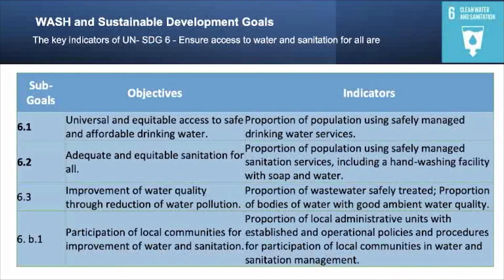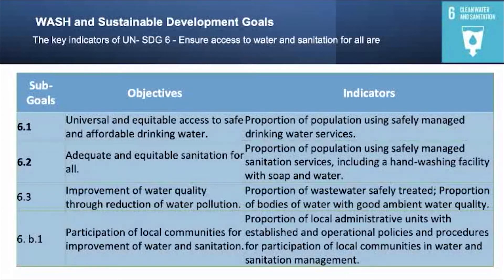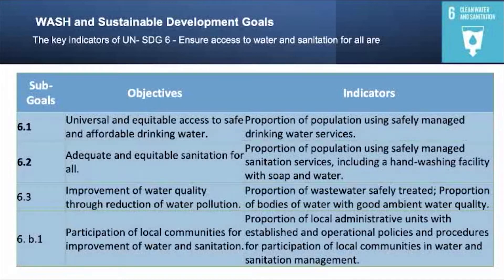Target 6.B.1 focuses on participation of local communities for improvement of water and sanitation. The indicator is the proportion of local administrative units with established and operational policies and procedures for participation of local communities in water and sanitation management. This is called community-based water and sanitation management systems, which plays a major role in ensuring hygiene practices in rural areas.